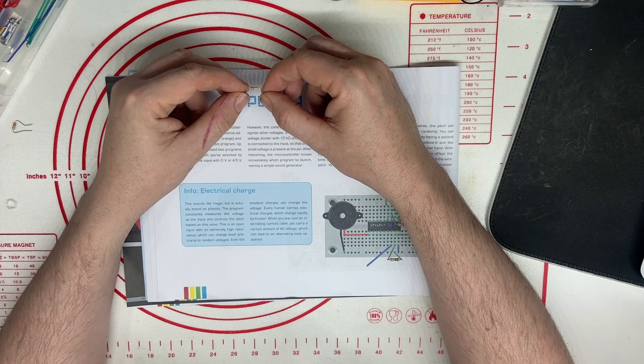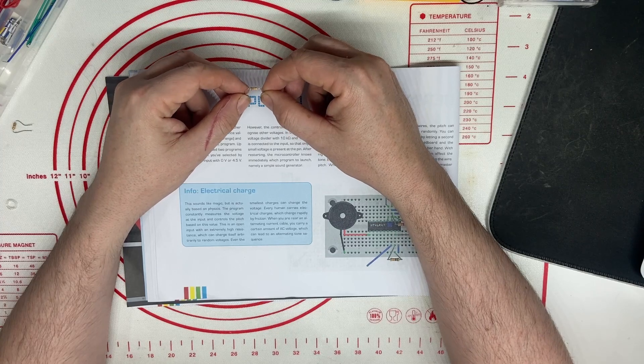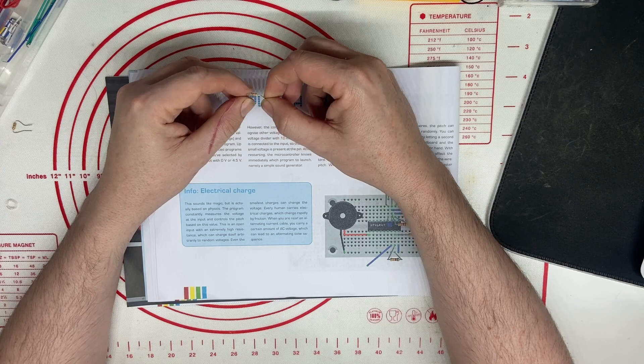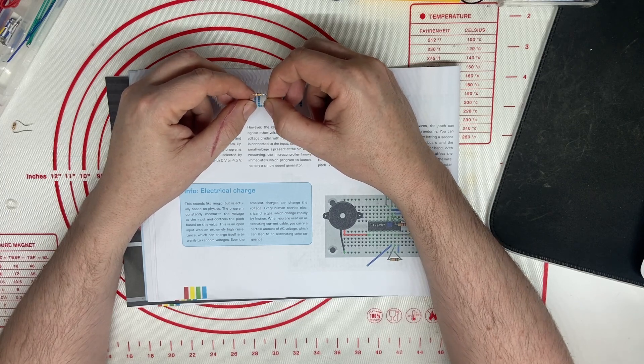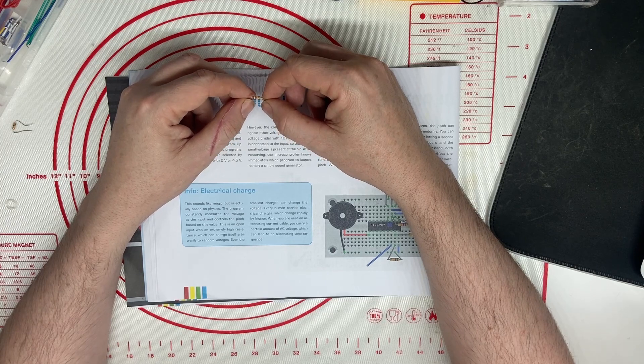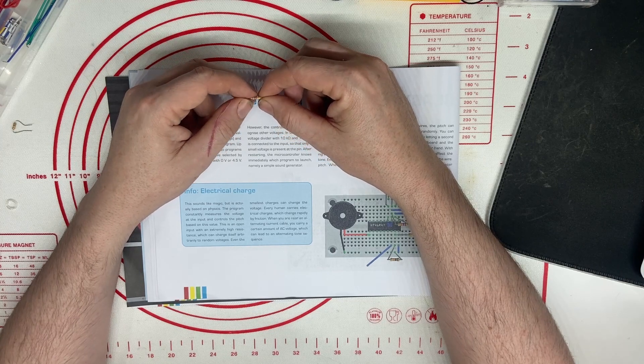However, the controller can also recognize other voltages. In this circuit a voltage divider with 10k ohms and 100k ohms is connected to the input so that only a small voltage is present on the pin.